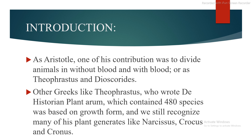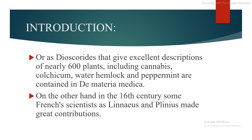Other Greeks, like Theophrastus, who wrote the Historia Plantarum, which contained 480 species, was based on the growth form, and we still recognize many of his plants and genera, like Narcissus, Crocus, and Cronus. Dioscorides gave excellent descriptions of nearly 600 plants, including Cannabis, Colchicum, Water Hemlock, and Peppermint, contained in De Materia Medica.